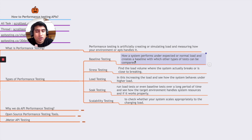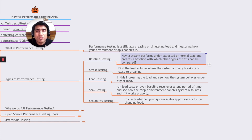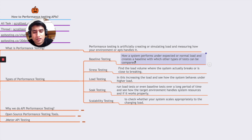We basically want to find out the baseline of our API metrics — how the server behaves. For example, if there is a baseline of a thousand requests per second that this server can handle, that becomes the baseline. After a thousand requests, it starts behaving very differently.